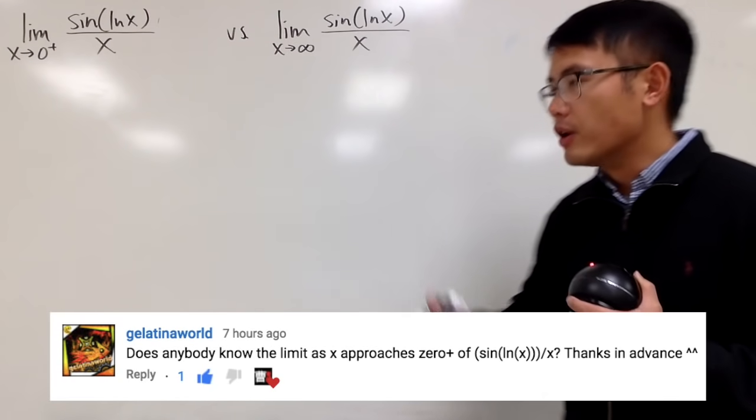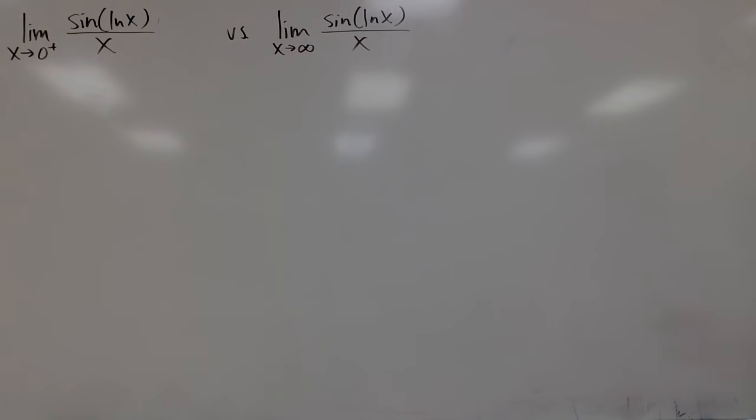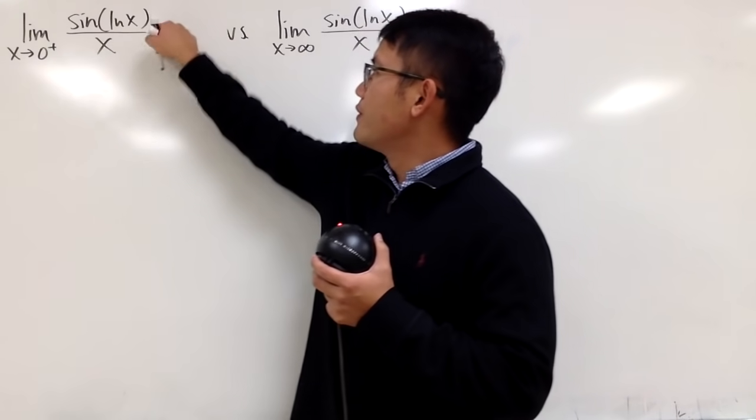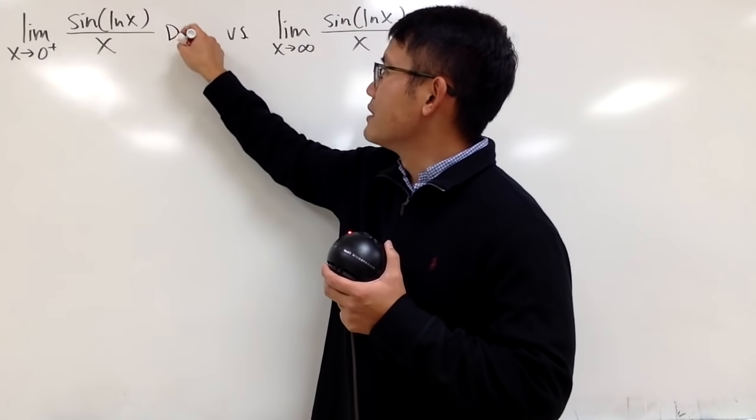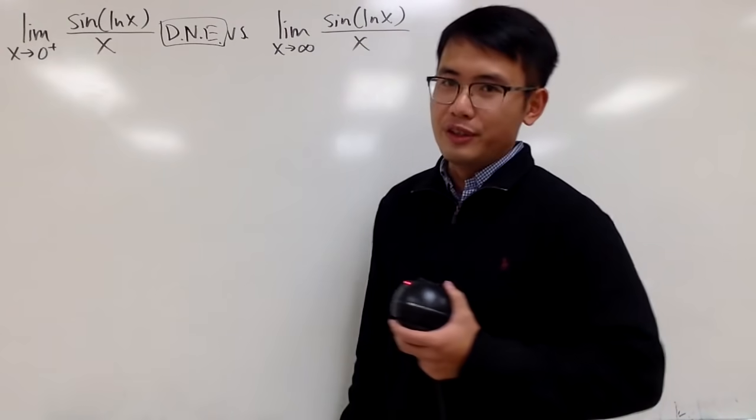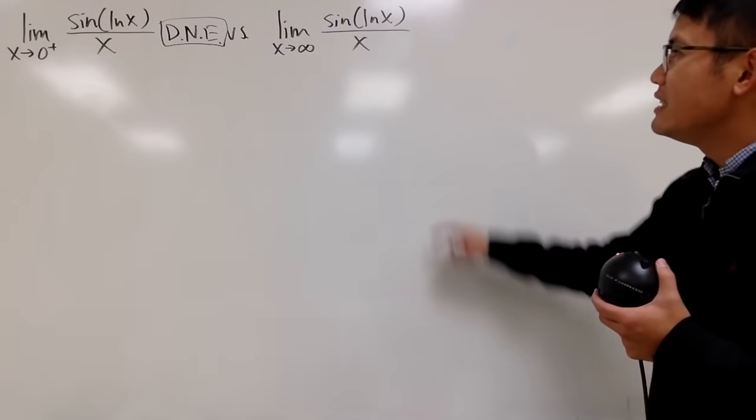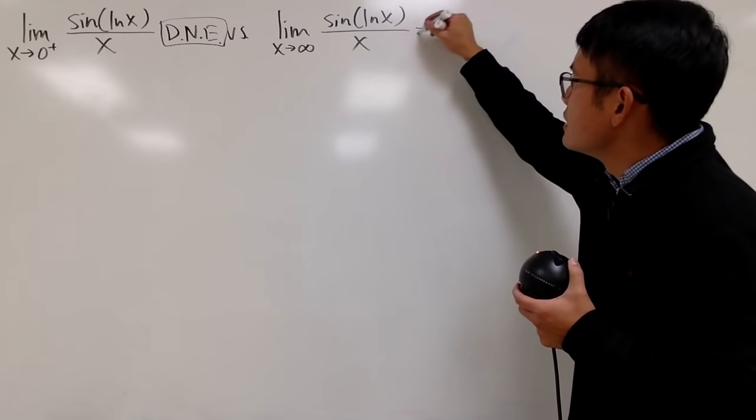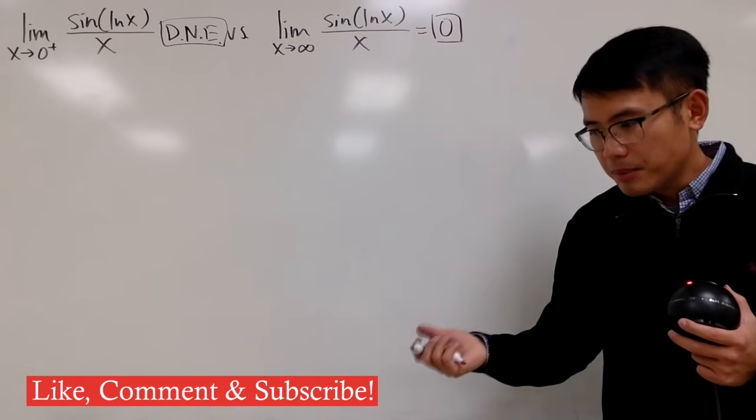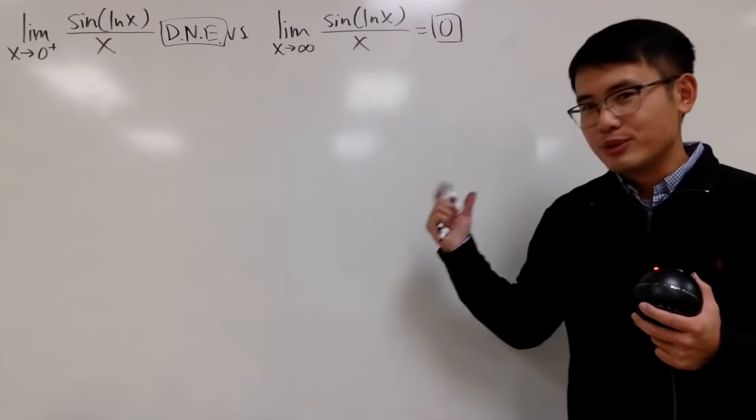And you know the deal. Please pause the video and try them first. Okay, I will tell you guys that the answer to the first one right here is doesn't exist. So you can just put down DNE with three dots if you prefer. And the answer to the second one is equal to 0. You guys can comment down below and let us know how you approach it. And I will show you guys my solution right here.